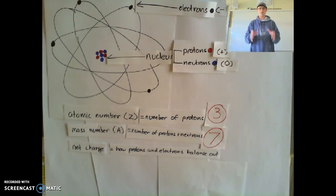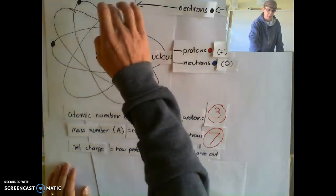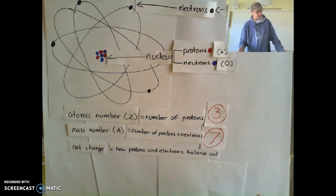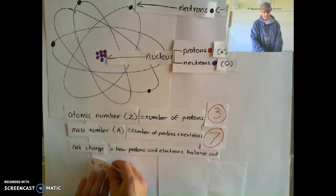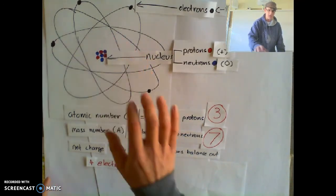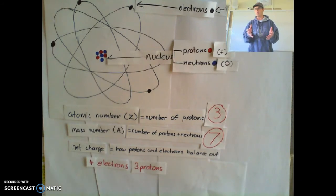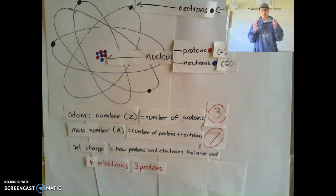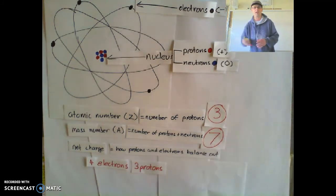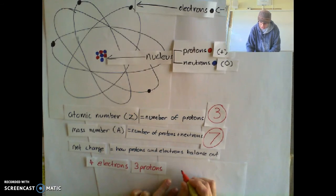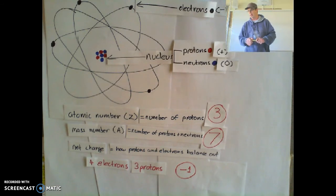So what's going to be the charge of this atom here? Let's have a look at it. We've got one, two, three, four electrons — so four electrons. And I've got one, two, three protons — so three protons. Four electrons are minus, three protons are plus. So I've got four minuses and three pluses — I've got one more electron than proton. So that's going to give me a net charge of minus one. My net charge for this atom is minus one.